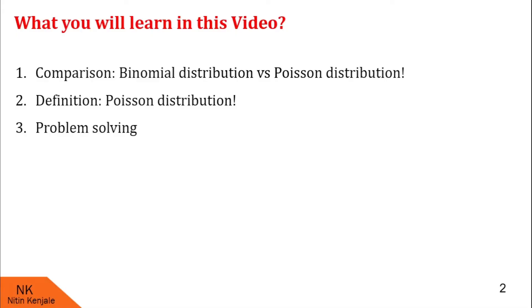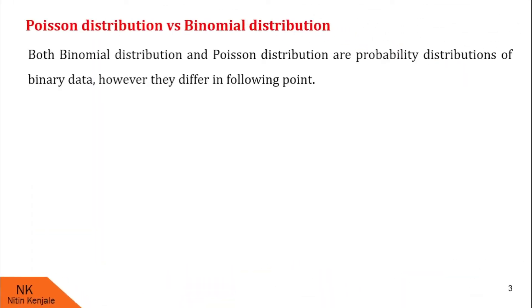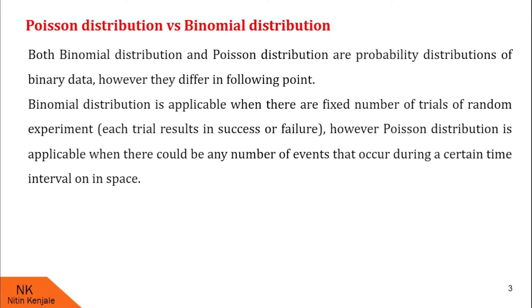So let us see the comparison between binomial and Poisson distribution. Note that both these distributions — binomial and Poisson — are probability distributions of binary data. However, they differ in the following point. Binomial distribution is applicable when there are a fixed number of trials of a random experiment, where each trial results in success or failure.